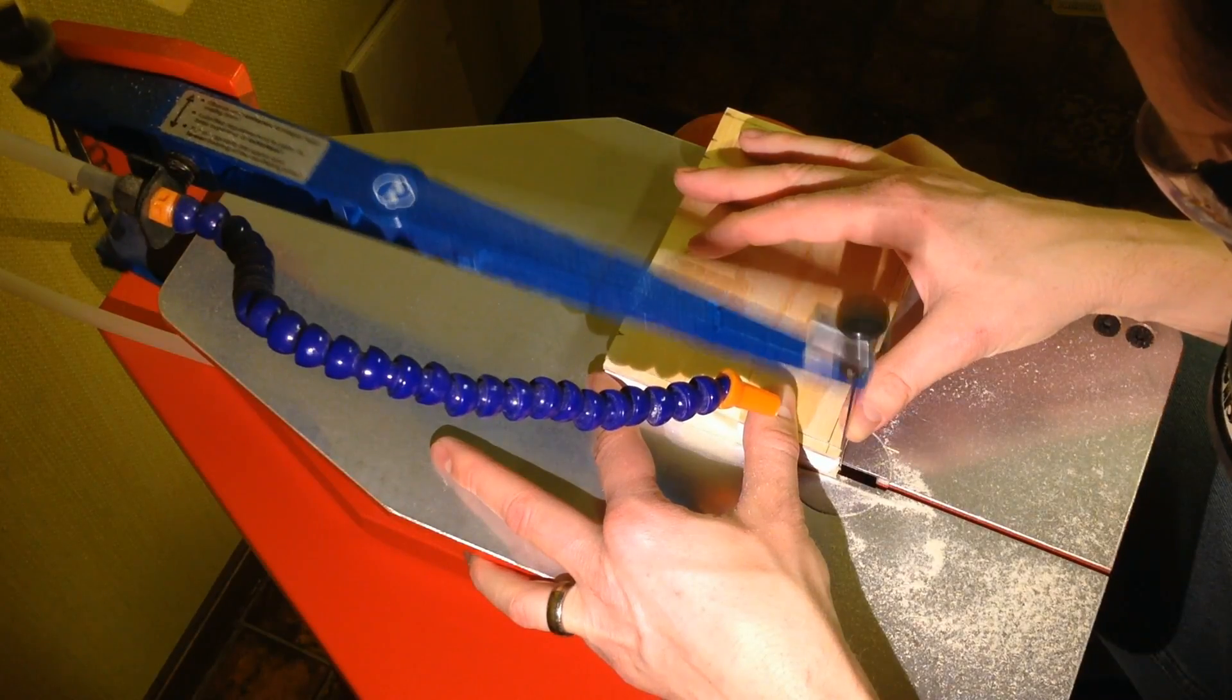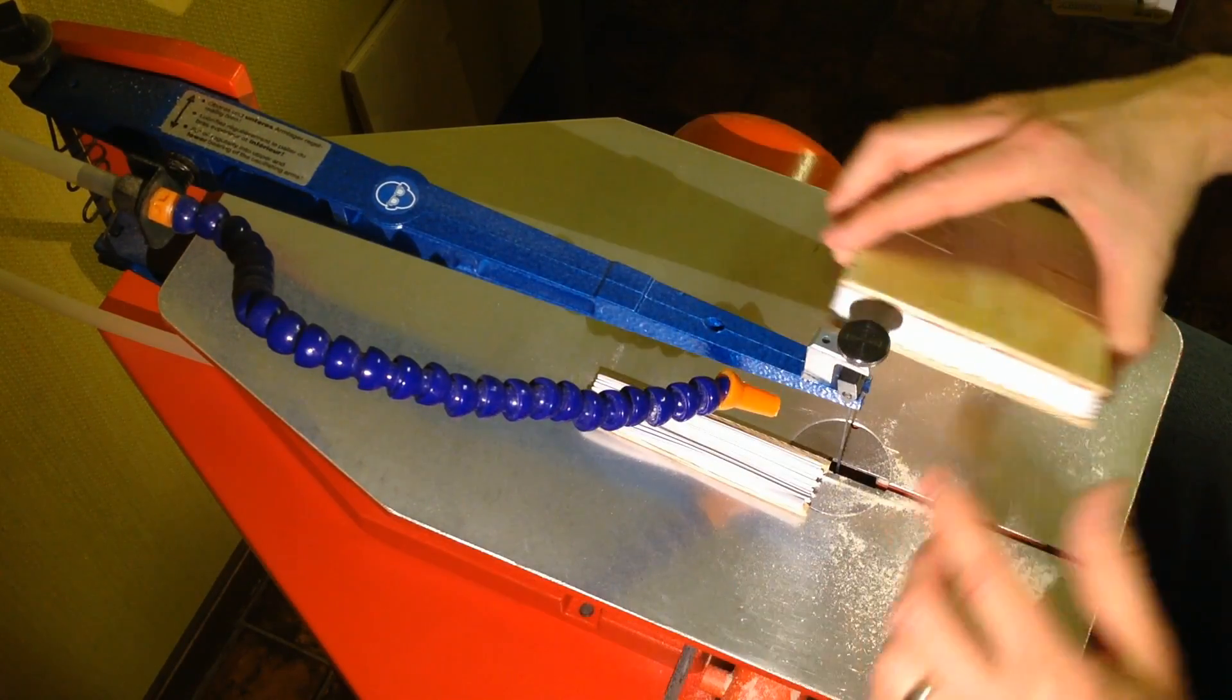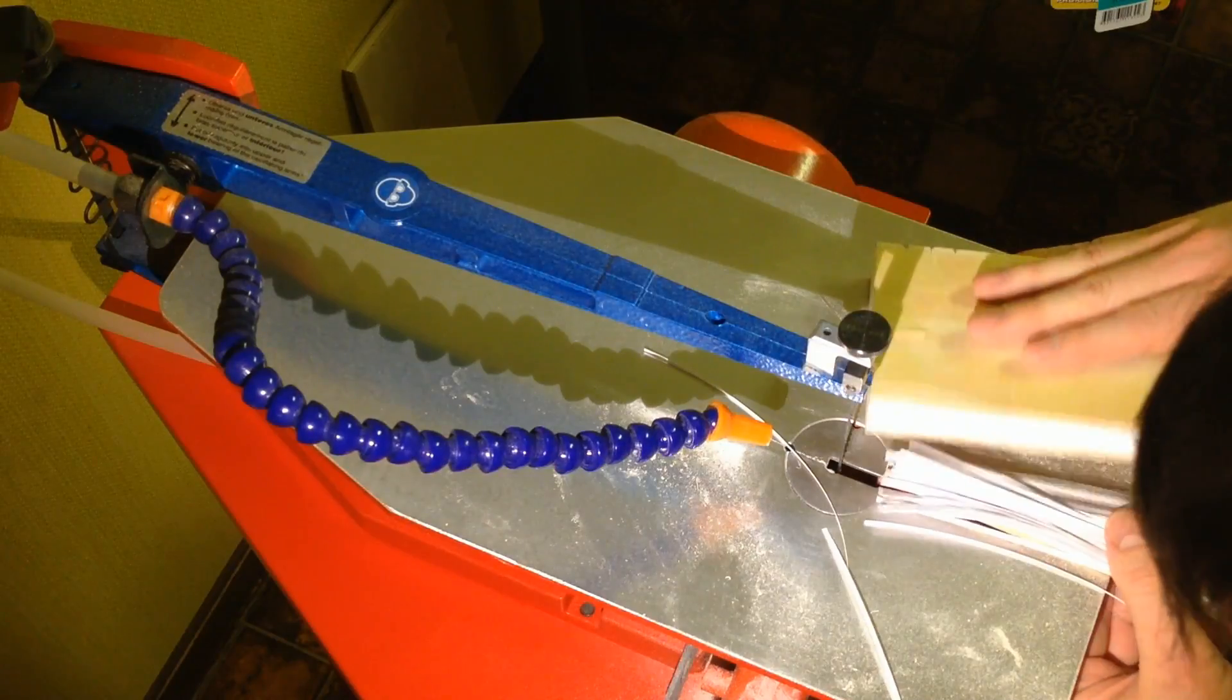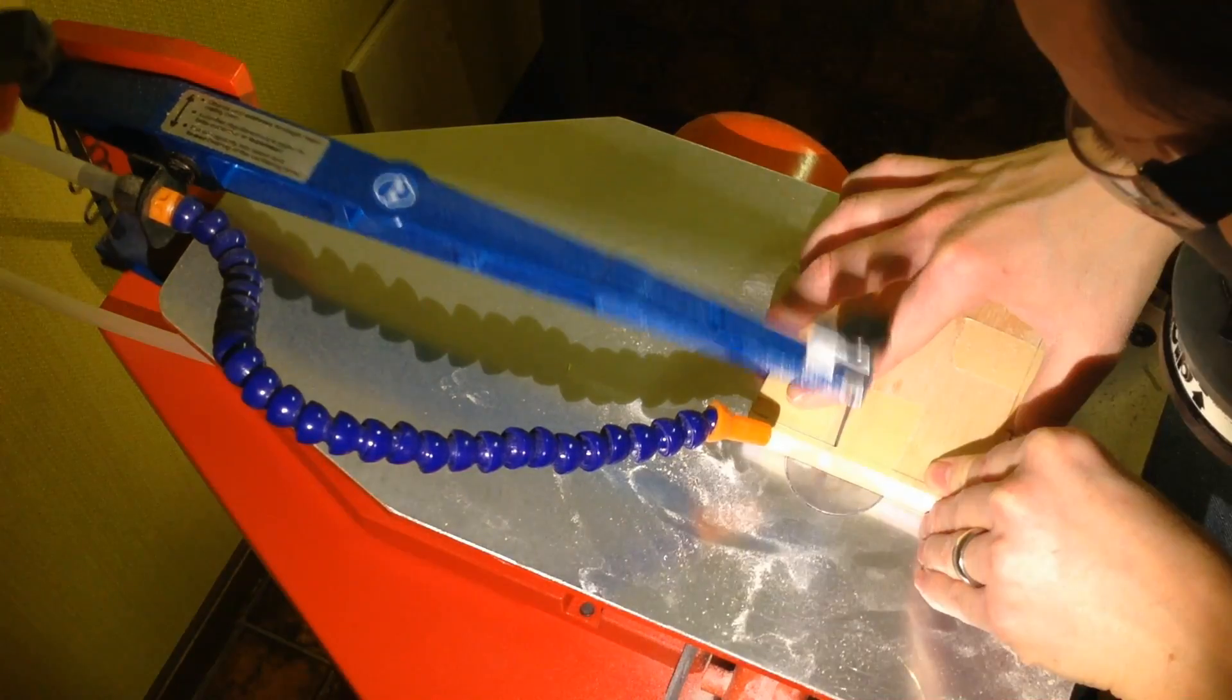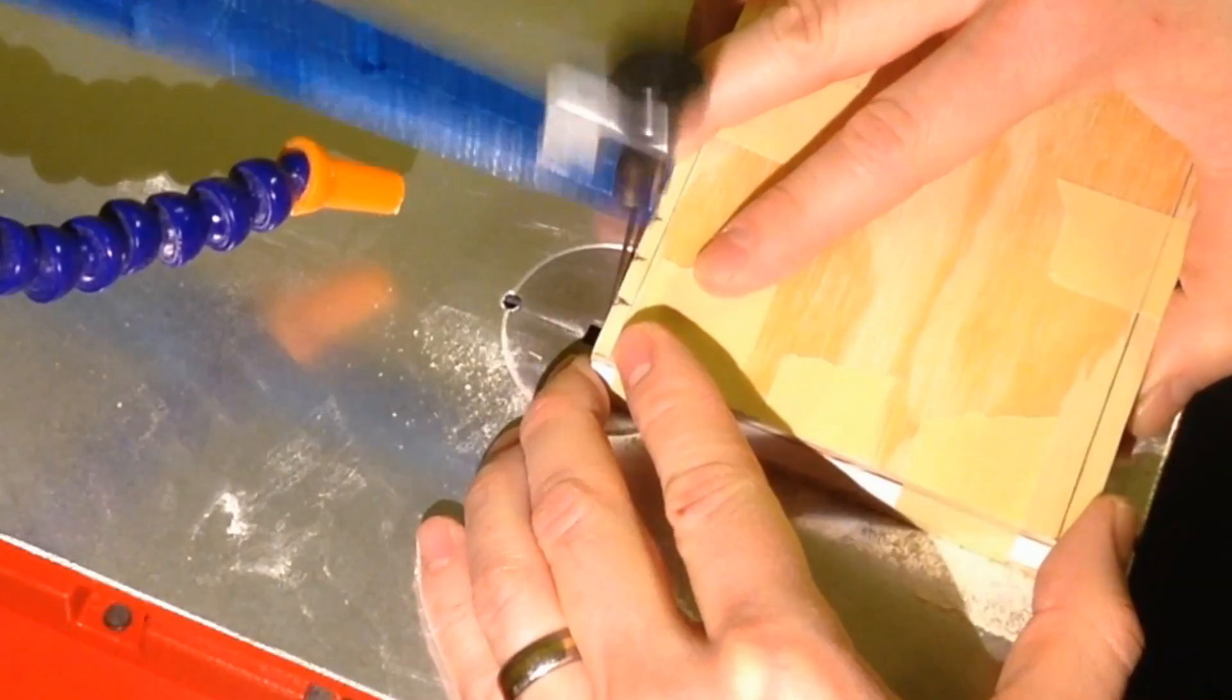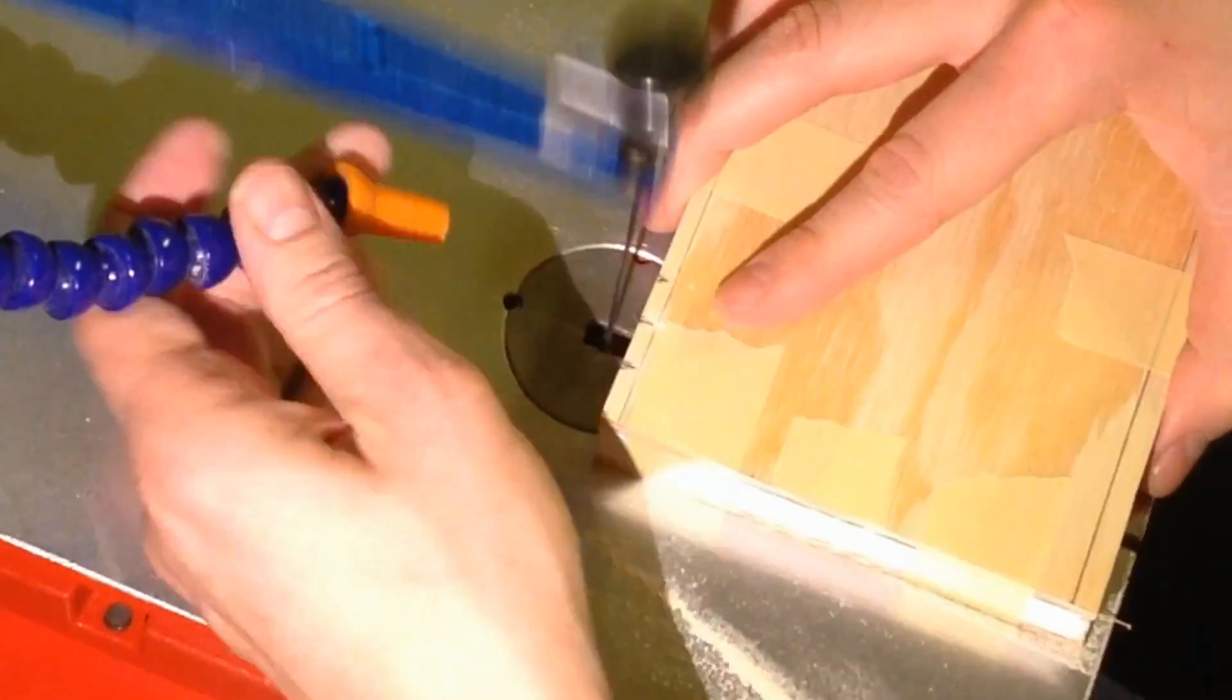I stack the signatures between two pieces of sacrificial wood. And then I cut the sides on a scroll saw using a number nine blade. I also cut the slits that will be used to bind the signatures later on.